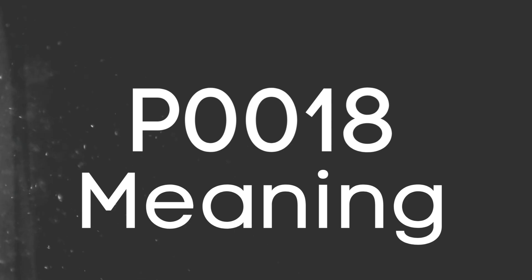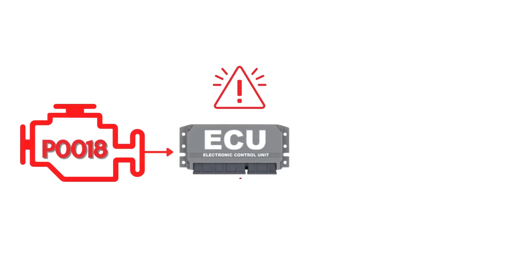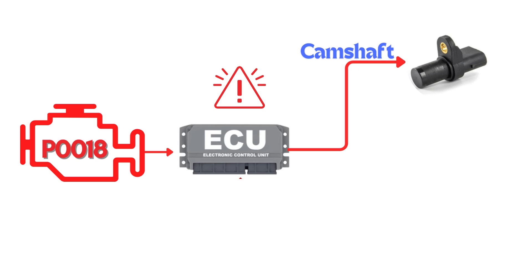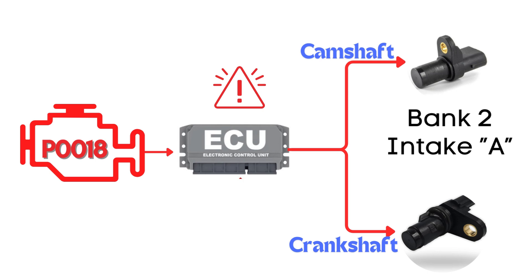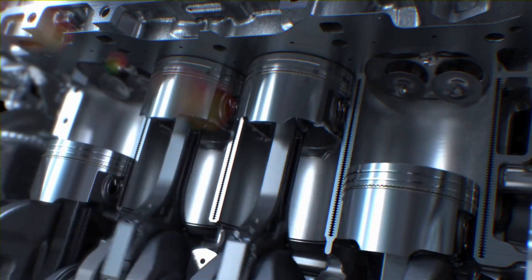let's understand what the P0018 code is. The P0018 code indicates that the ECM has detected a correlation error between the camshaft position sensor for bank 2, specifically the intake camshaft, and the crankshaft position sensor. This means there's a misalignment between the camshaft and crankshaft positions.